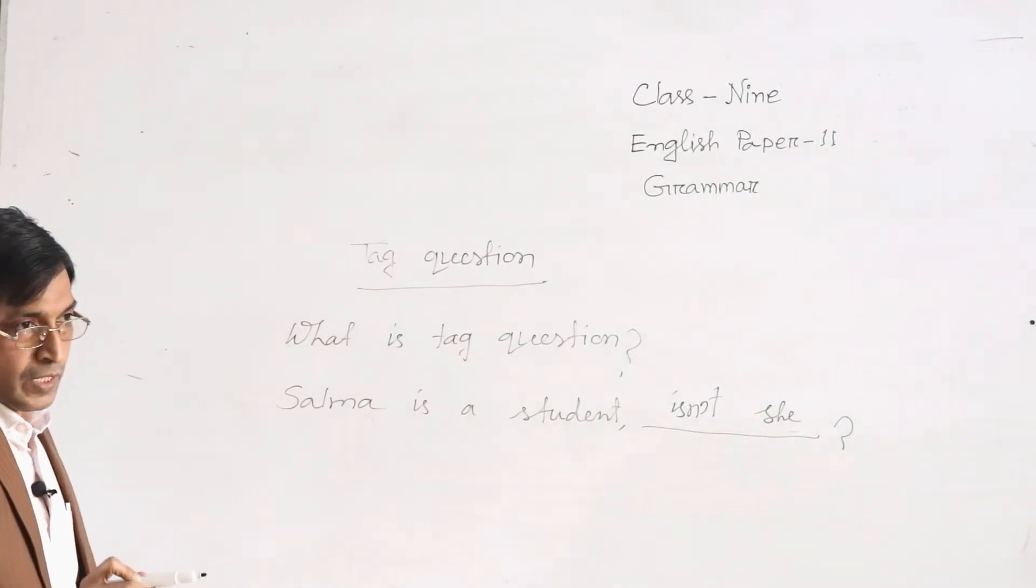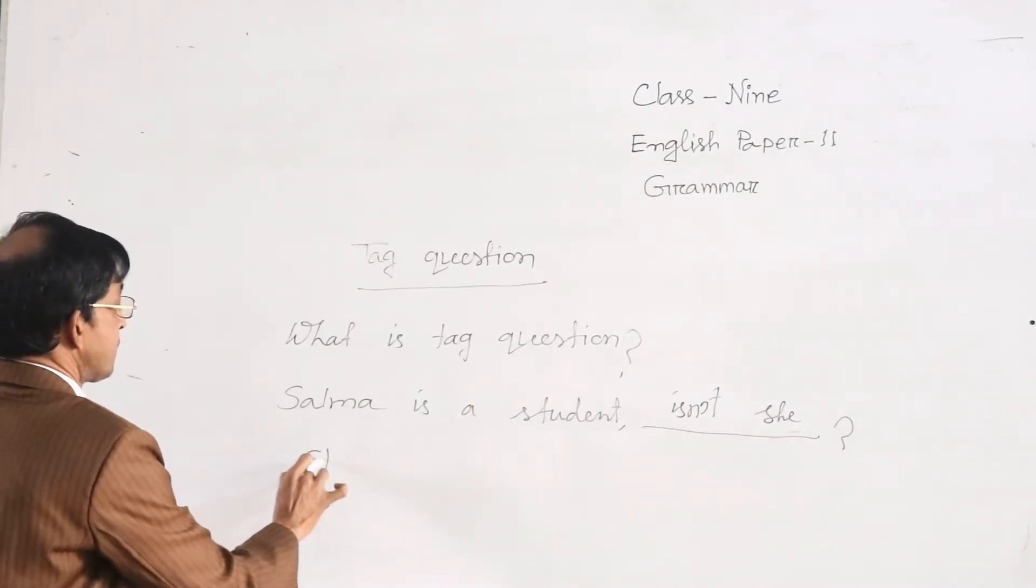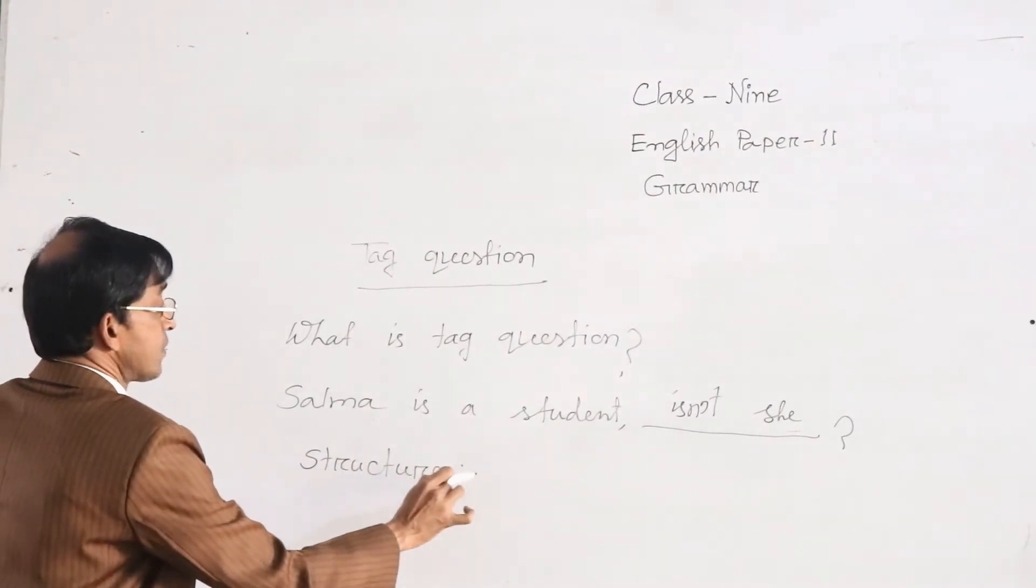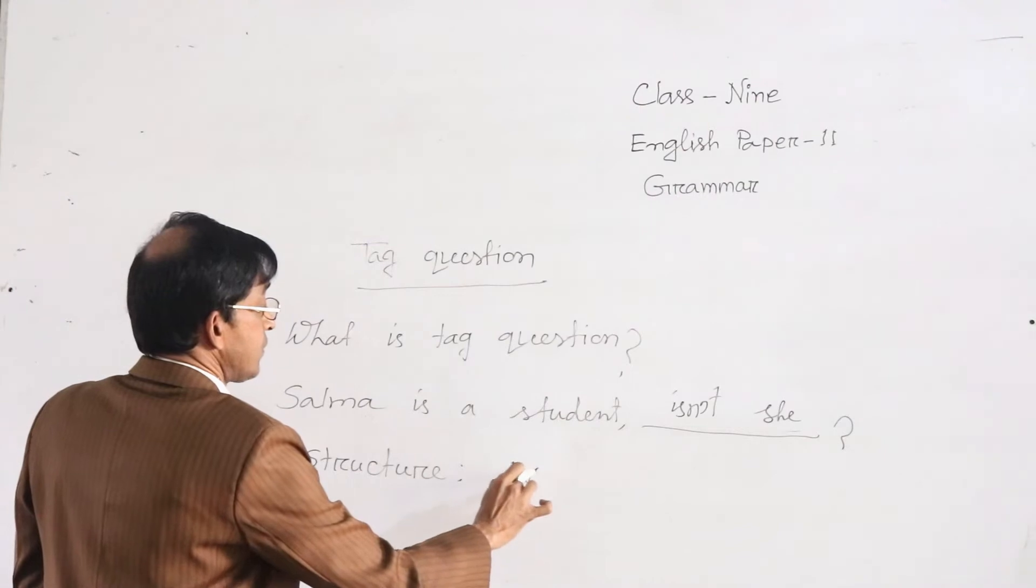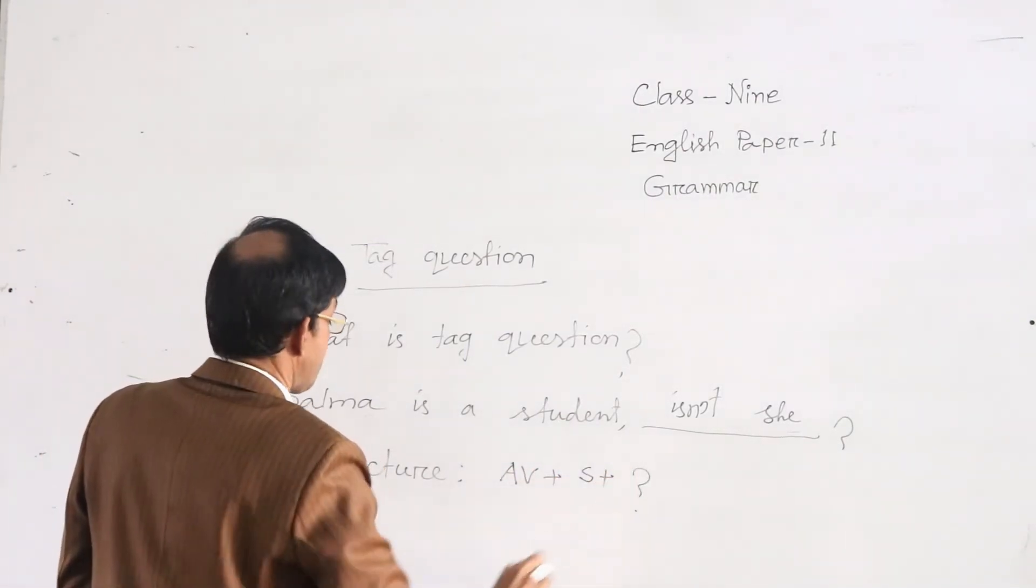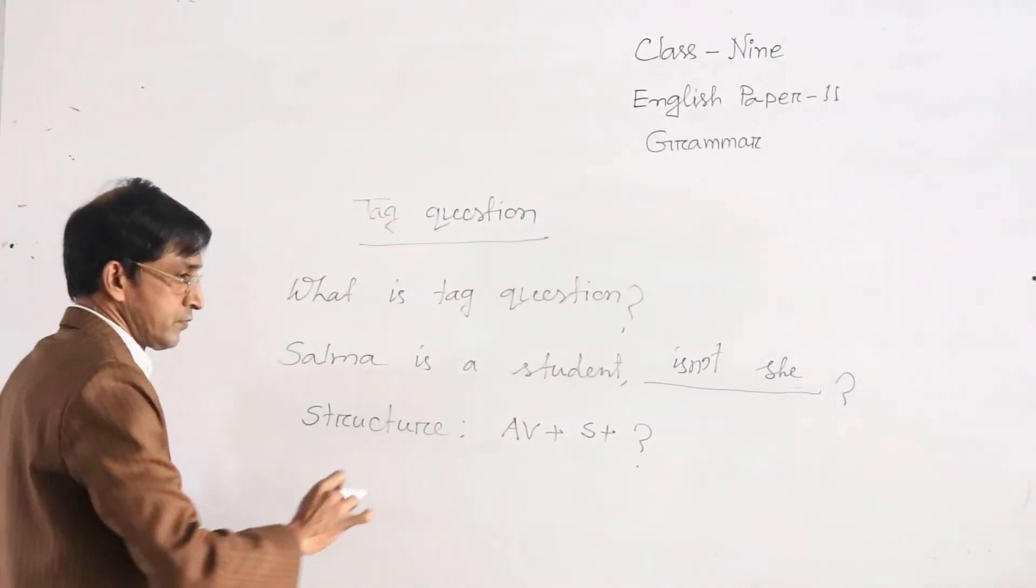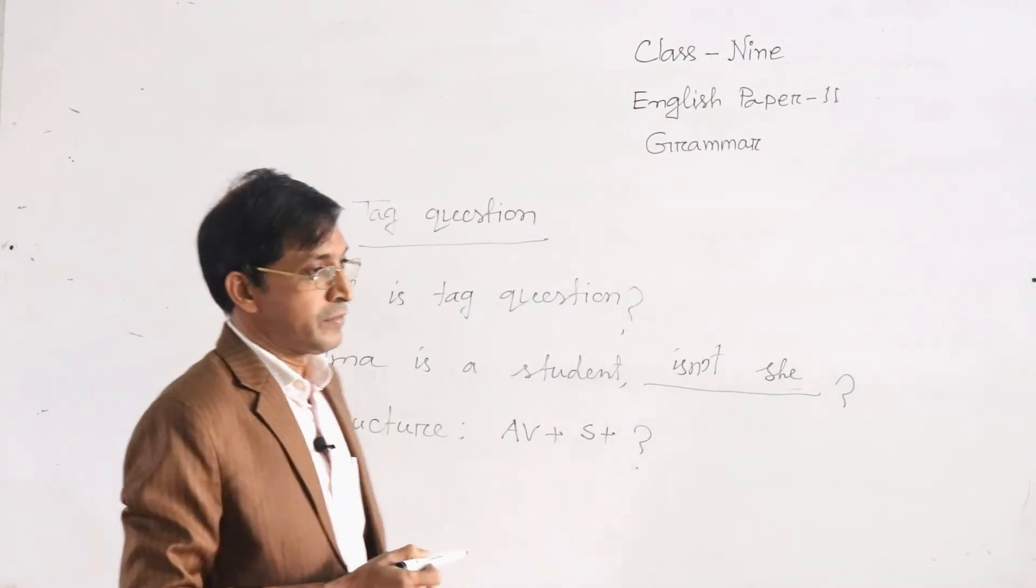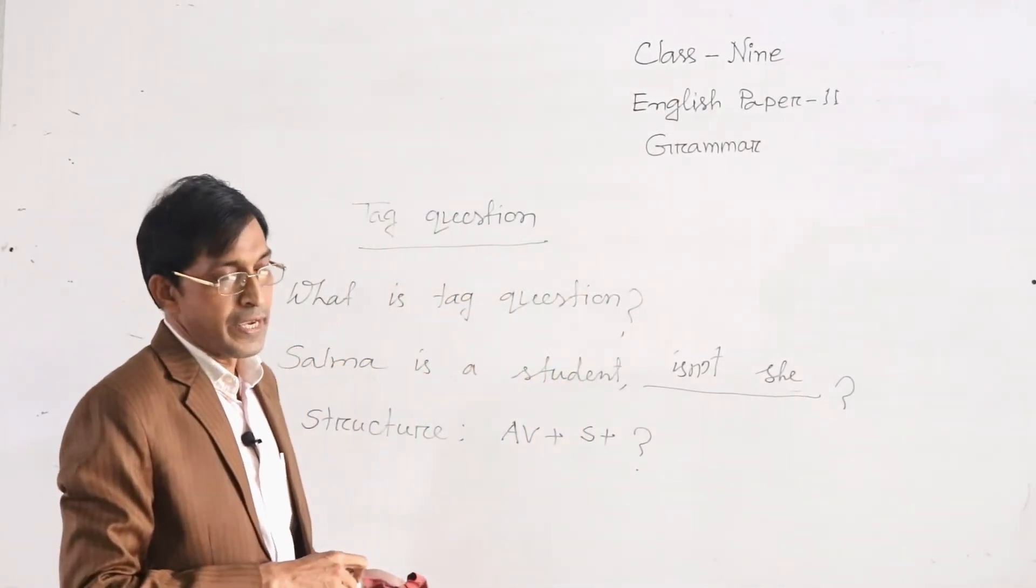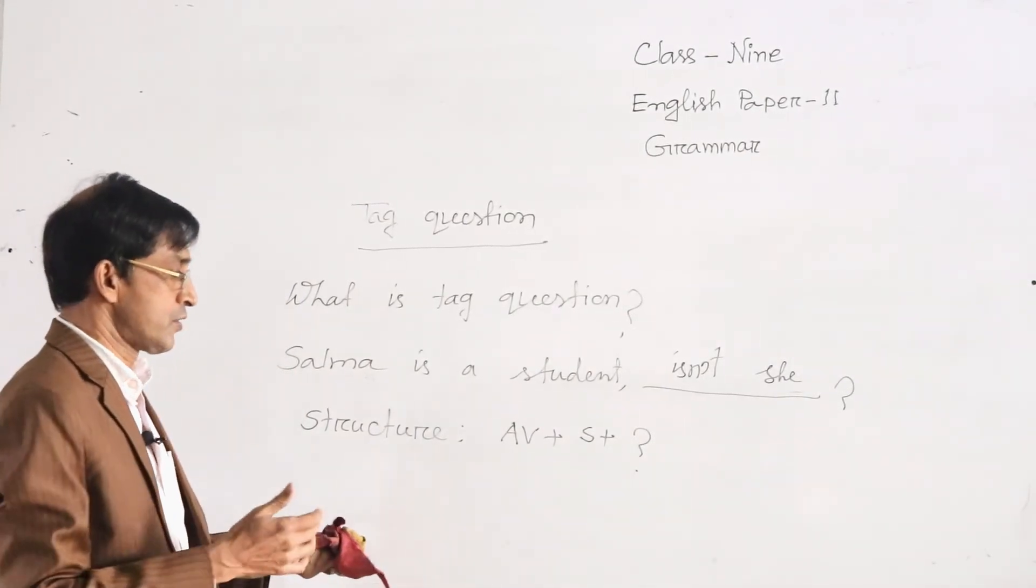You have to maintain a structure to make tag question. Structure is auxiliary plus subject plus question mark. This is a structure of tag question. Auxiliaries, you have already learnt auxiliary verbs: am is are was were, have has had, shall should, will would, can could, may might. All these are auxiliaries.